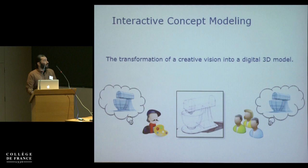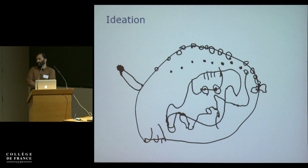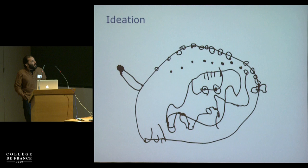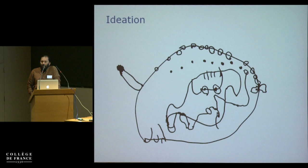Now what interactive concept modeling is not, for this talk, is ideation. An ideation sketch is a drawing that was actually created by my 3-year-old daughter. When I saw it I thought: fish. When I asked her, she said 'Papa, it's a happy whale.' A few months back I asked her again, and she said, 'Papa, it's John Lennon in the yellow submarine.'